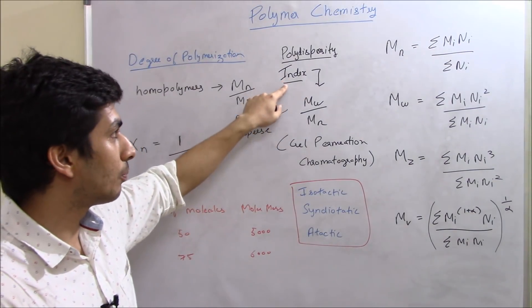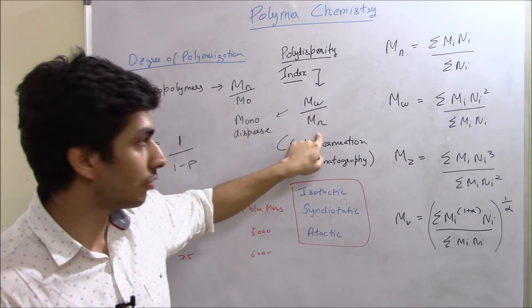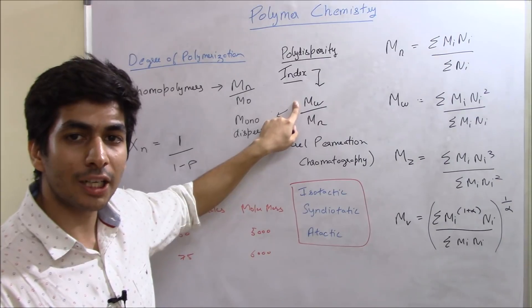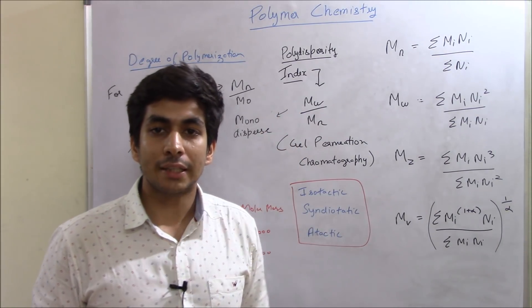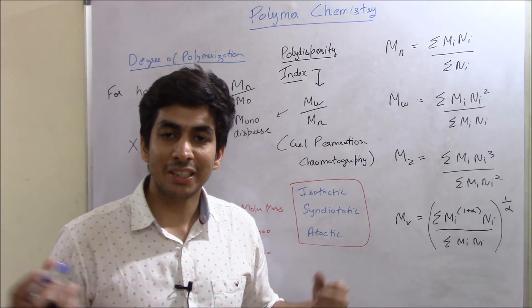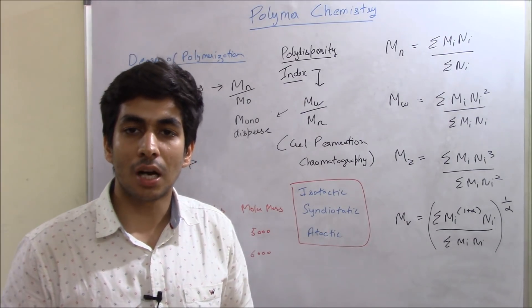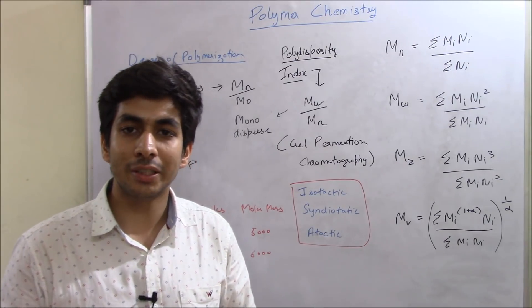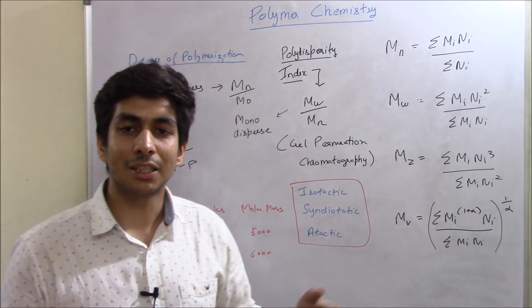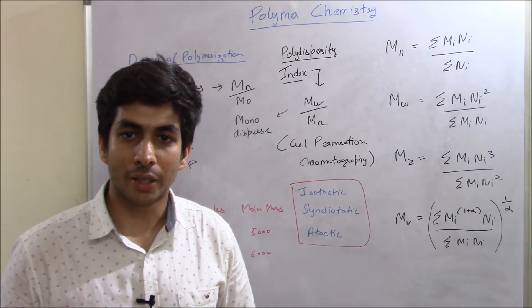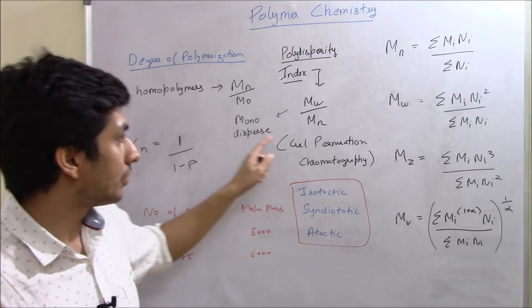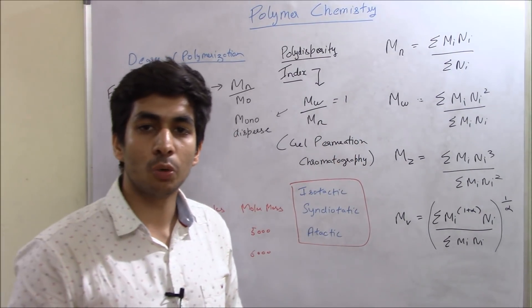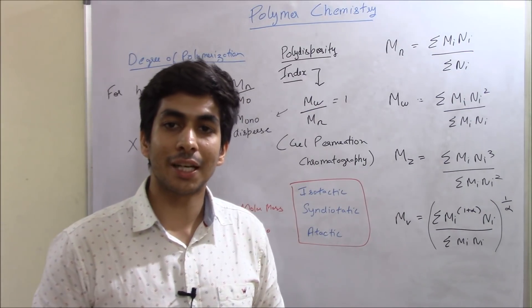Then we have a very important term that is polydispersity index that is equal to your weight average upon number average. So from here we had calculated weight average and this was a number average. So it's just the division of weight average molecular weight upon number average molecular weight. So if it is equal to one, then the polymer or then the solution is said to be monodispersed. And what do you mean by monodispersed means that the size and the dimensions of the polymer are uniform. It's a uniform polymer. You use dispersity monodispersed for colloids also. If you use it in terms of colloids, it means all the particles are of same size. If you use it in terms of polymers, it means basically the polymer is quite uniform. It is made up of same monomeric units. So it's quite uniform.